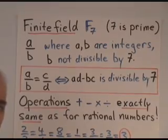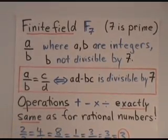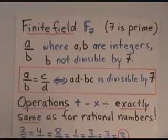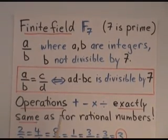But now we require that b, the denominator, is not divisible by 7. In other words, it can't be 7, or 14, or 21, or minus 7, or anything like that. And we declare two such expressions, a over b and c over d, to be equal, precisely when ad minus bc is divisible by 7.